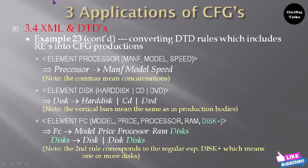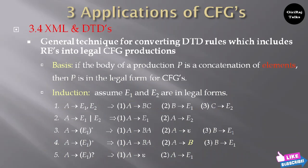Note that the second rule corresponds to the regular expression disk-plus, meaning one or more disks. The general technique for converting DTD rules with regular expressions into legal CFG productions: the base case is that if the body of a production P is a concatenation of elements, then P is already in legal CFG form. By induction, assuming E1 and E2 are in legal forms, A tends to E1 E2 becomes A tends to BC, with B tends to E1 and C tends to E2.